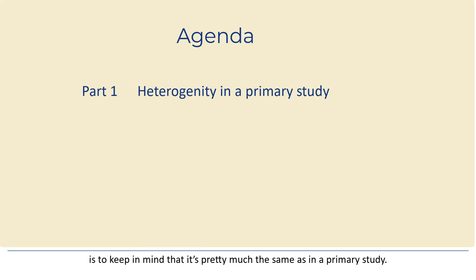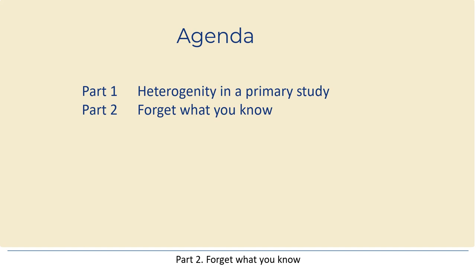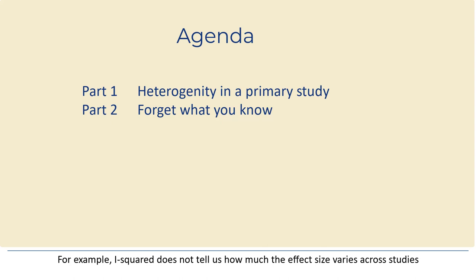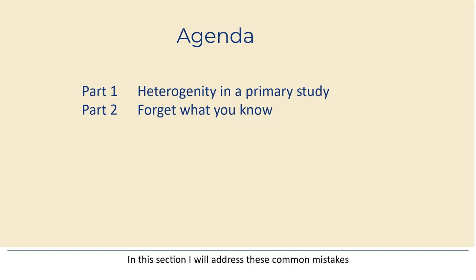Part two: forget what you know. If you already work with meta-analysis, the chances are that most of what you know about heterogeneity is wrong. For example, I-squared does not tell us how much the effect size varies across studies. In this section, I'll address these common mistakes.